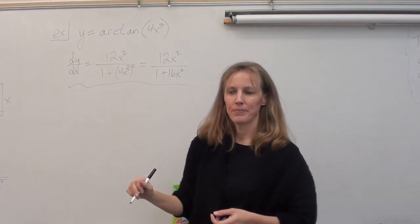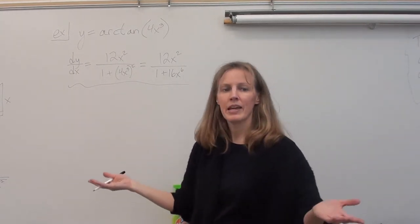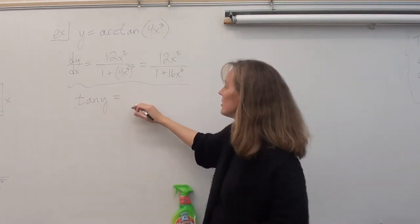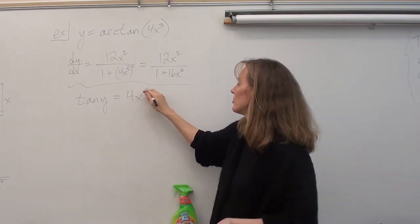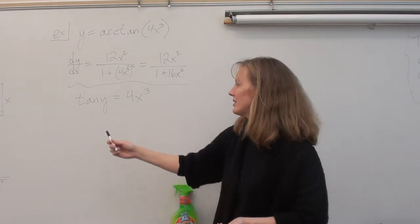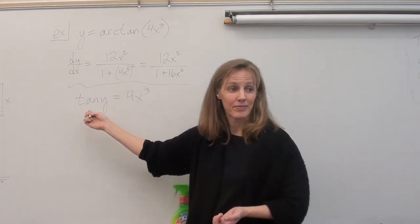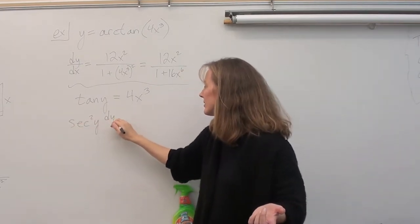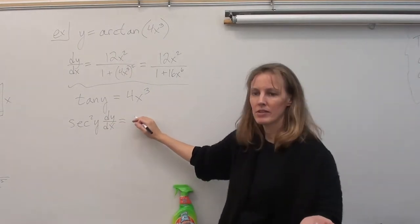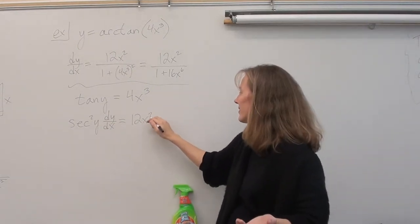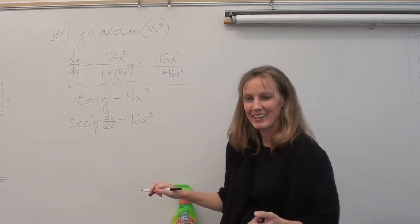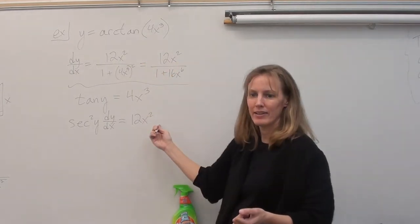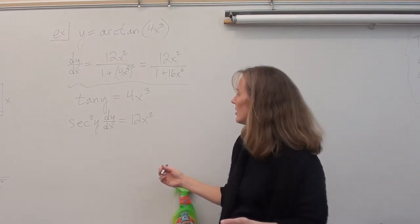What would we do first? Take the tangent. Take the tangent of both sides. So, on the left we have tan y, and on the right, what are we left with? 4x cubed. Now, let's take the derivative implicitly. That's a good idea. What's the derivative of tangent y? Secant squared y dy dx. And on the right? 12x squared. Oh, is that why there's no square root on the bottom? Is it because it's secant squared? Oh, yes. Yes.